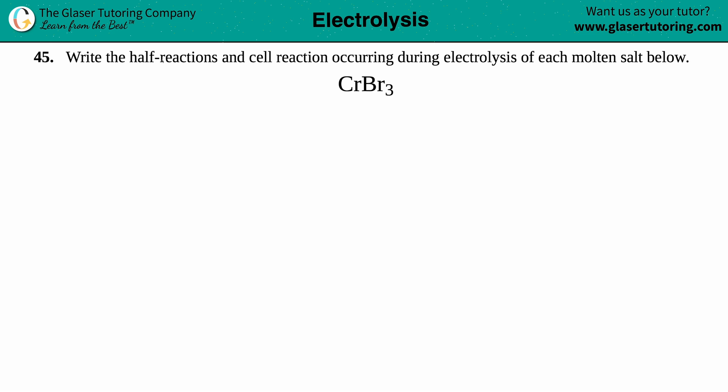Number 45: Write the half-reactions and cell reaction occurring during electrolysis of each molten salt below. We have chromium(III) bromide, which is CrBr₃. We're undergoing electrolysis with a molten salt, but all I see here is just a metal and a non-metal. Remember, a metal and a non-metal is always an ionic compound.